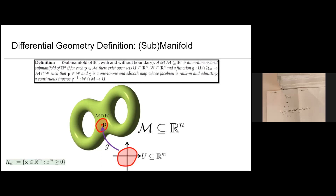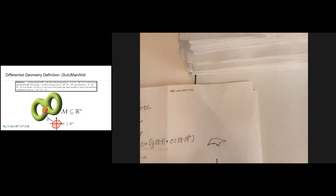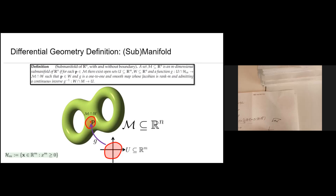To accommodate boundary points, the definition includes H^m, which allows the pre-image to be a half-plane instead of the entire plane. So for boundary points, the local neighborhood is not a full plane but a half-plane. That's the differential geometry definition for submanifolds. Do we have questions so far?